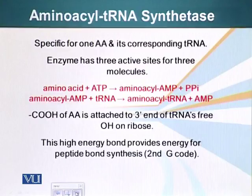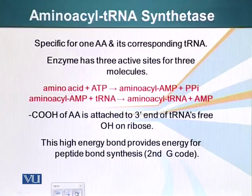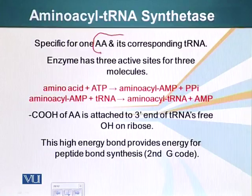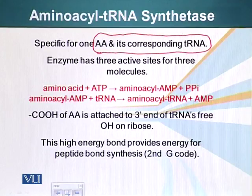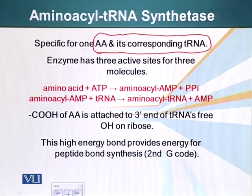Let me introduce you to a very important enzyme, or group of enzymes, called aminoacyl tRNA synthetase. This is a group of enzymes. Each one in this group is specific for a particular amino acid and its corresponding tRNA. So one of these enzymes will recognize a specific amino acid and its corresponding tRNA. There are as many aminoacyl tRNA synthetases as there are tRNAs.